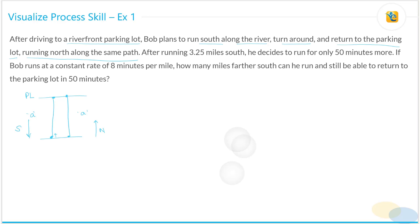Now let's read further. After running 3.25 miles south, so let's say that he's at this point and this is 3.25 miles, he decides to run only for 50 minutes more. Now what does that mean? This is very important. He decides to run only for 50 minutes more, which means that all of this distance needs to be covered in 50 minutes.